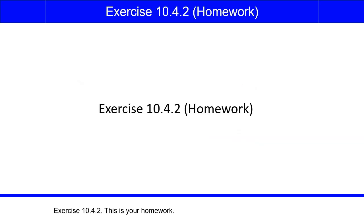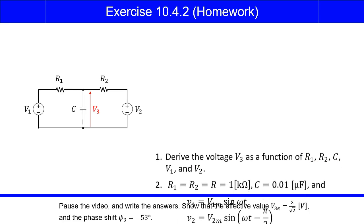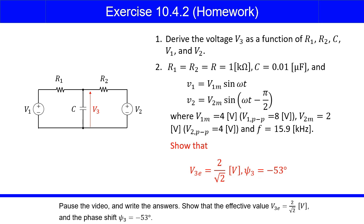Exercise 10.4.2: This is your homework. Pause the video and write the answers. Show that the effective value V3E equals 2 over square root 2, and the phase shift psi 3 equals negative 53 degrees.